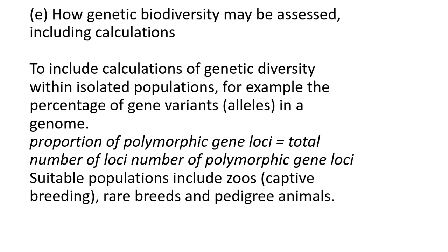Earlier in the specification for biodiversity we looked at what biodiversity was, and that included habitat variation, genetic variation, and also species biodiversity. We need to be able to measure each one of those, and genetic biodiversity is measured using the polymorphic gene loci equation.